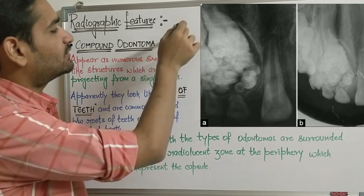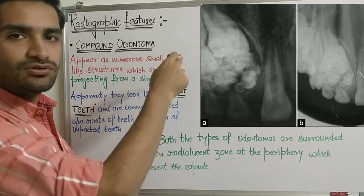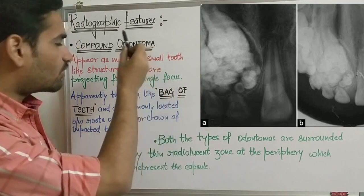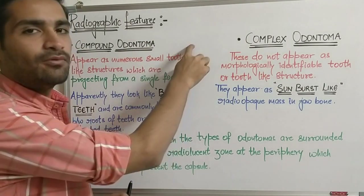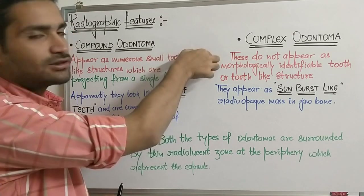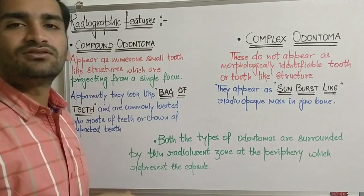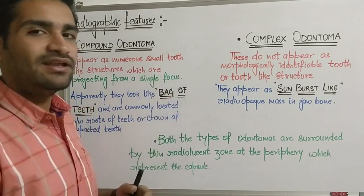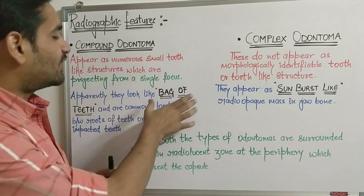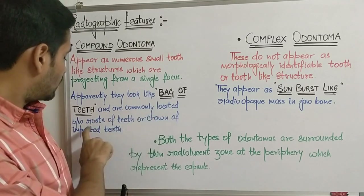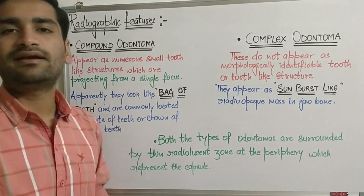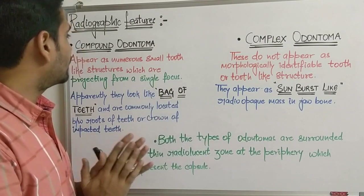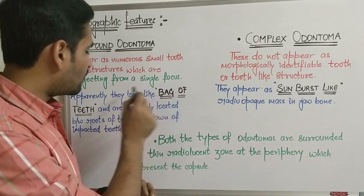The appearance of compound odontoma is often described as a 'bag of teeth' — on the radiograph you will see what looks like a lot of teeth collected together. So for compound odontoma remember: bag of teeth appearance, with tooth-like structures projecting from a single focus — meaning a single point from which all the tooth-like structures are seen emerging.